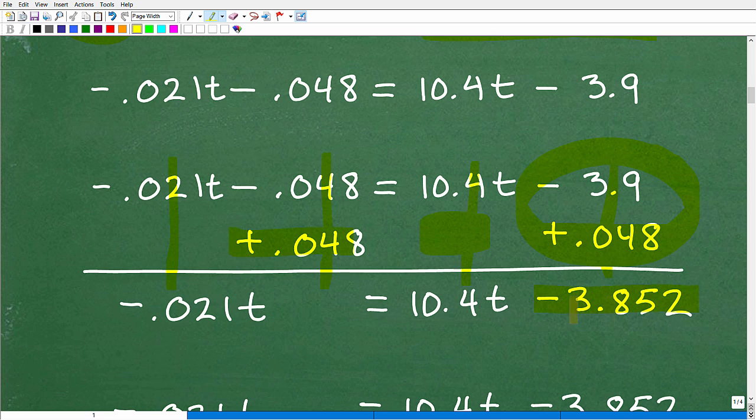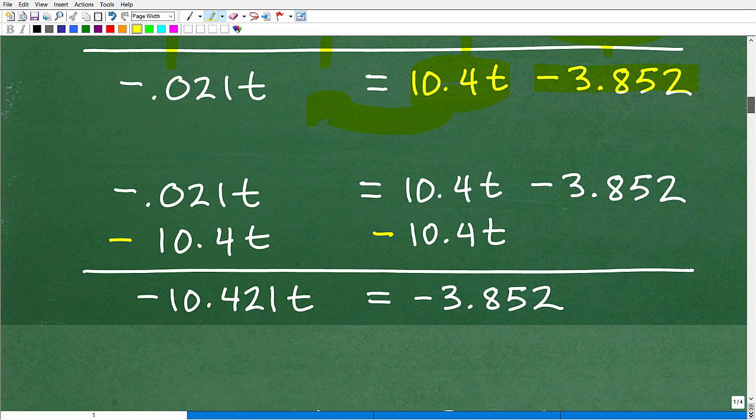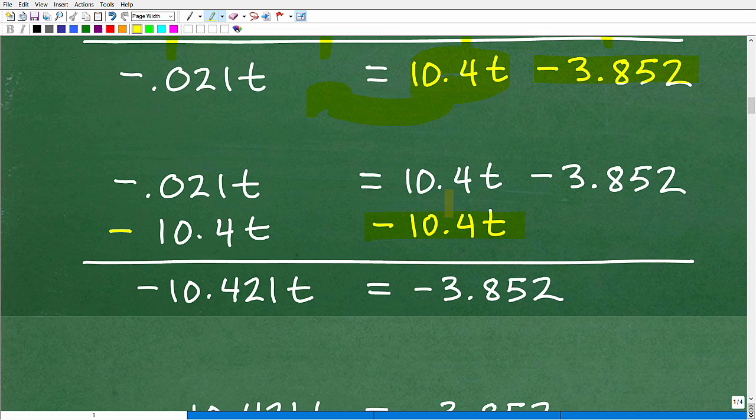All right, so this is where we're at. We got all the numbers to the right, but now we have to get all the variable terms to the left. So let's take care of this 10.4t. And we're going to do it the same way. We're going to subtract 10.4t from the right-hand side, but we have to subtract from the left-hand side as well. And then we'll combine like terms, okay, by adding down in a column manner. So negative 0.021t plus negative 10.4t. Again, use your calculator. It's going to give you negative 10.421t. And then these guys go away. That just leaves us with negative 3.852 plus nothing, and that's our negative 3.852.